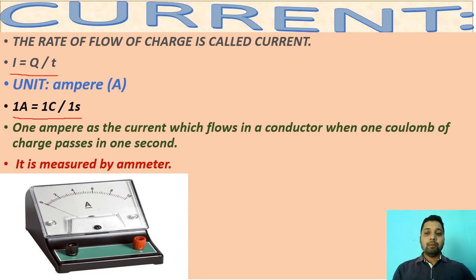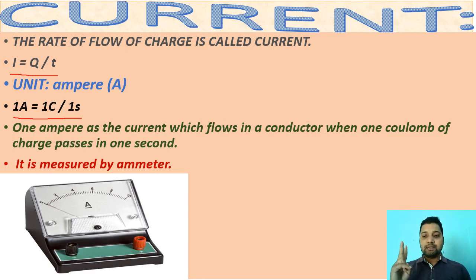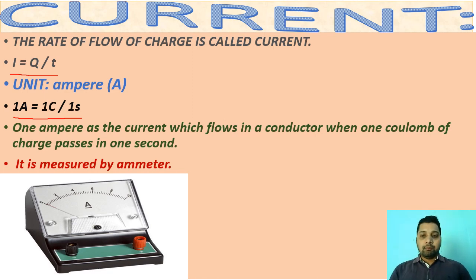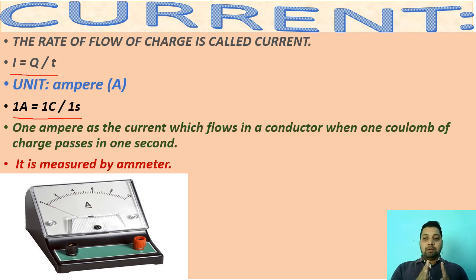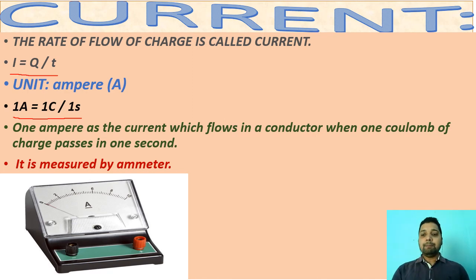Alternating current and direct current — direct current is obtained from inverters or batteries. Alternating current is obtained from the main supplier. In alternating current, the voltage increases and decreases over time. But in the case of direct current, there is no alternation of voltage; the voltage always remains constant. This current flows from one terminal to another due to two factors: one is called potential difference and the second is called resistance.